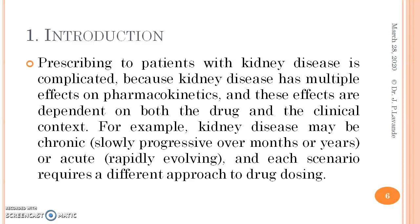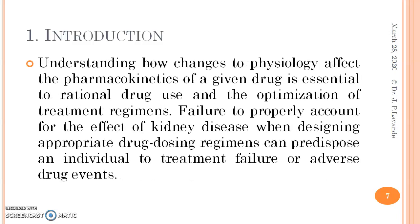For example, kidney disease may be chronic — slowly progressive over months or years — or acute, that is rapidly evolving, and each scenario requires a different approach to drug dosing. Understanding how changes to physiology affect the pharmacokinetics of a given drug is essential to rational drug use and the optimization of treatment regimens. Failure to properly account for the effect of kidney disease when designing appropriate drug dosing regimens can predispose an individual to treatment failure or adverse drug events.